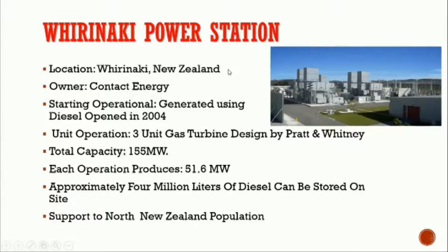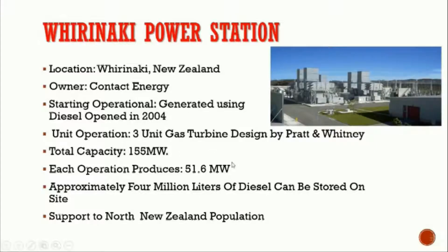The last example is Wairakei Power Station, located in Wairakei, New Zealand, owned by Contact Energy. The station operates using diesel, opened in 2004, and is designed by Pratt and Whitney with a total of 3 gas turbine units. The total capacity is 155 MW, with each unit producing 51.6 MW. Approximately 4 million litres of diesel can be stored on site at the power station.